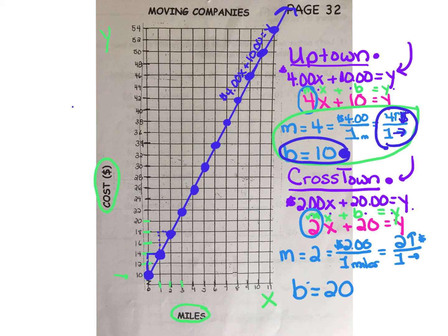Remember, the blue line represents Uptown Movers. We make sure and label that blue line with the equation. We can also label it with the word Uptown.